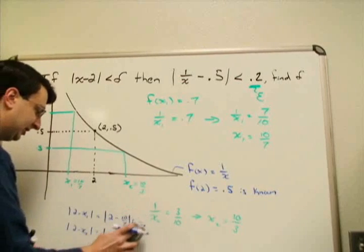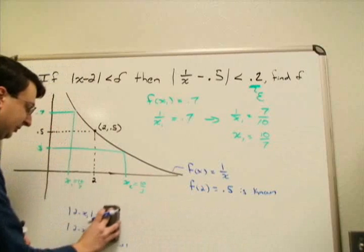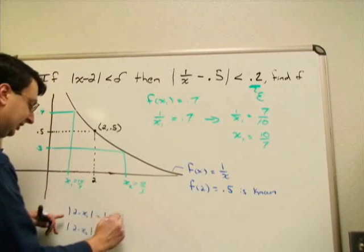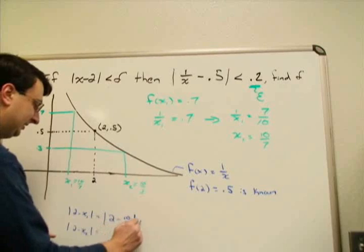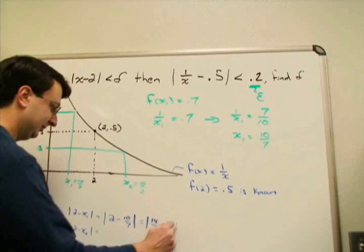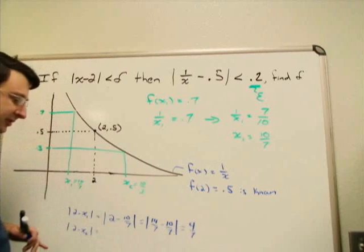I've got to take a step back here; I'm trying to do that a little bit too quickly. Absolute value of 2 minus 10/7: that's 14/7 minus 10/7, or 4/7 as a result.